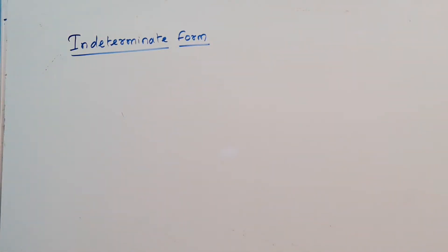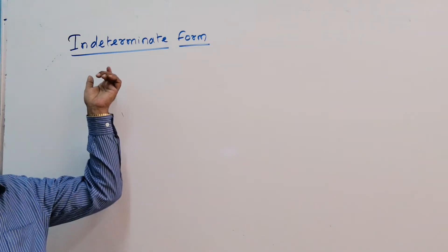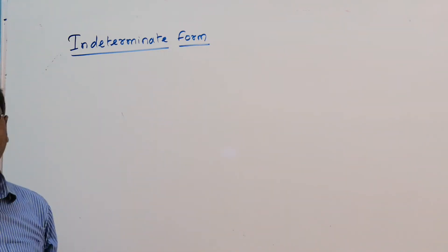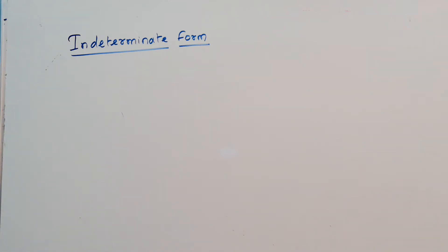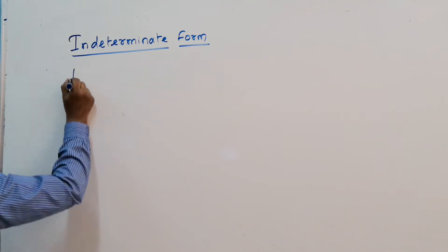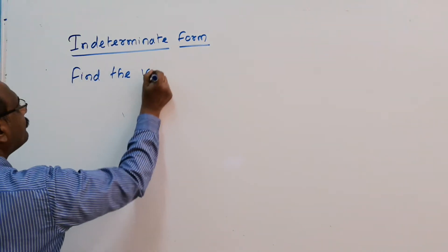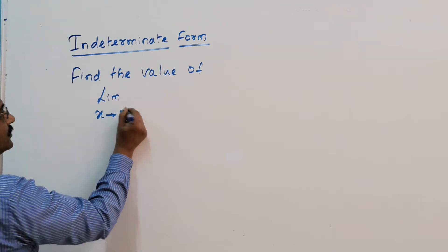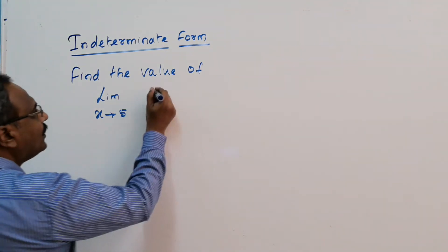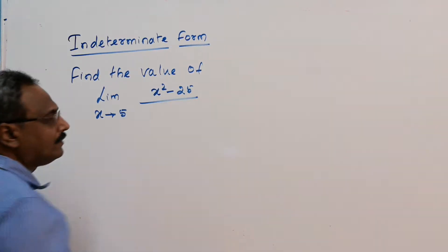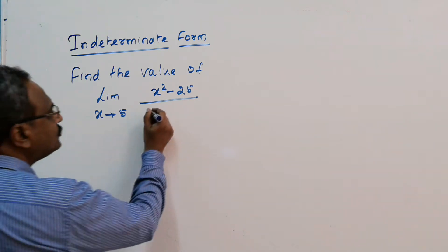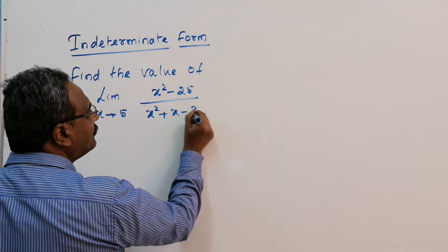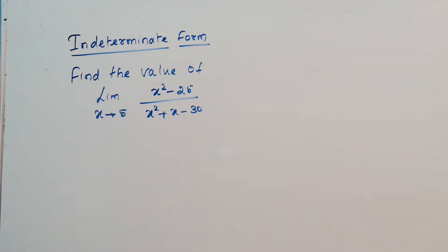Welcome back students. In this video we are going to discuss some more problems on limits in indeterminate form. For example, we need to find the limit x tends to 5 of x squared minus 25 divided by x squared plus x minus 30.